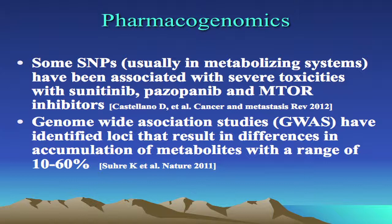You are looking at drug metabolism, absorption, and eventual bioavailability to maintain efficacy. In terms of pharmacogenomics, SNPs have been reported in metabolism enzymes — specifically the cytochrome P450 system — that have been associated with increased risk of toxicity with sunitinib, pazopanib, and some mTOR inhibitors, though no exact correlation has been confirmed yet. Genome-wide association studies have also identified different loci resulting in differences in metabolite accumulation rates, ranging quite widely from 10 to 60 percent, which could impact toxicity rates. About 8 to 10% of patients will unpredictably develop significant toxicity within the first few weeks of therapy.